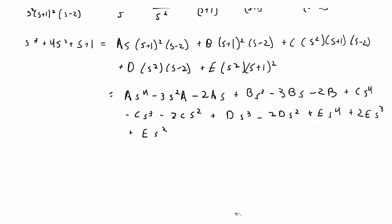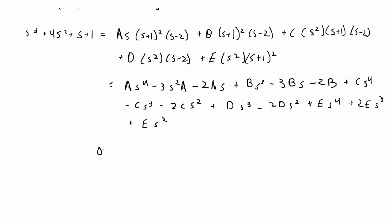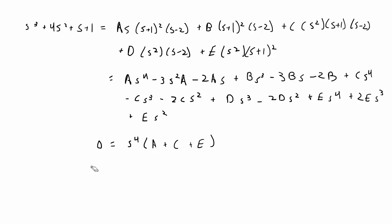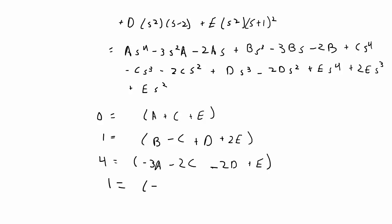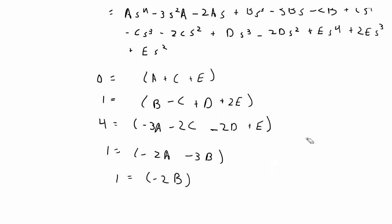Grouping like terms to create our system of linear equations: for s⁴: 0 = A + C + E. For s³: 1 = B minus C plus D plus 2E. For s²: 4 = negative 3A minus 2C minus 2D plus E. For s¹: 1 = negative 2A minus 3B. And the constant: 1 = negative 2B.